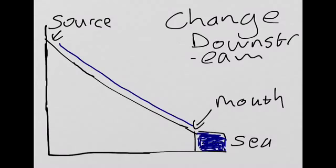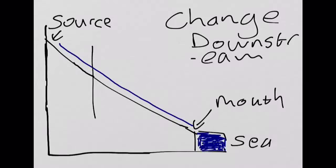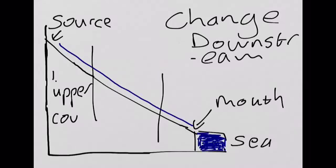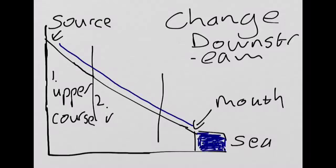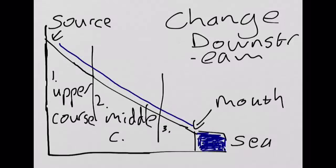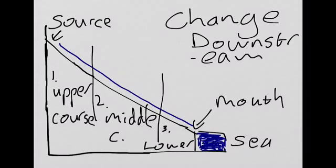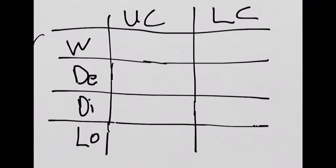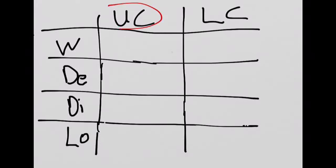Any river is divided into three clear sections. Section number one is called the upper course, section number two is called the middle course, and section number three is called the lower course. If we come across to this table, you can see that the letters UC represent upper course, and the letters LC represent lower course.